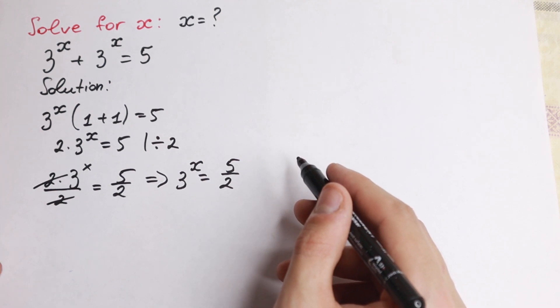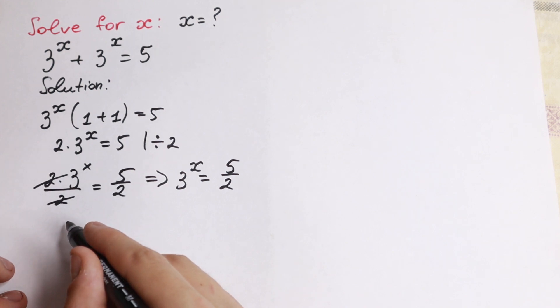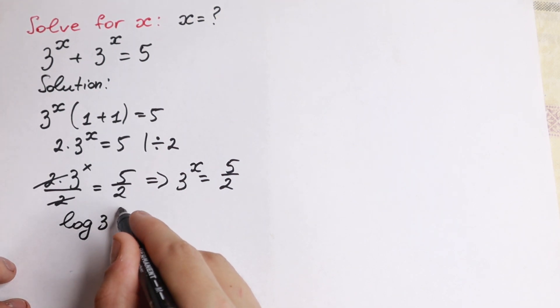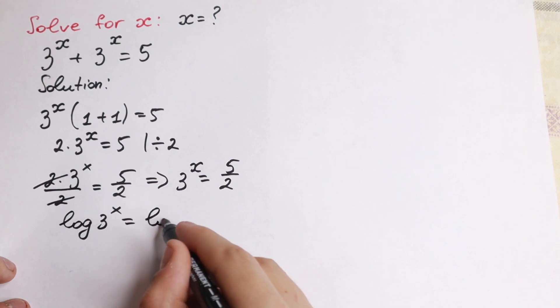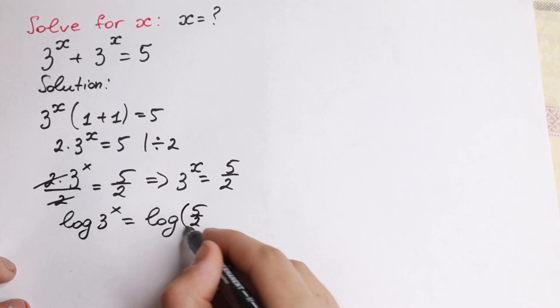Of course using logarithm. If we take log from both sides, we will have log 3 to the x equal to log 5 over 2.